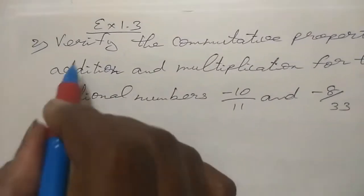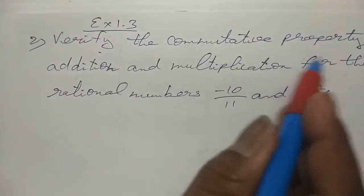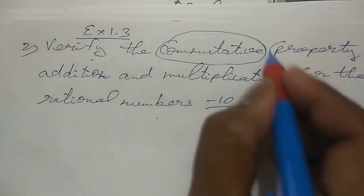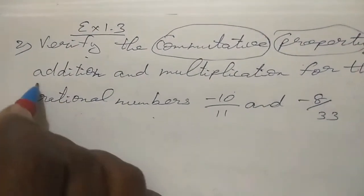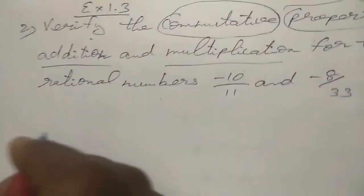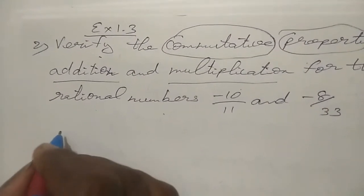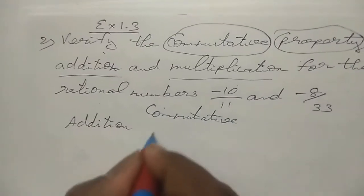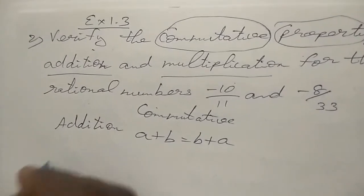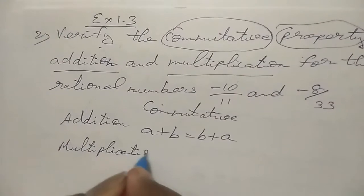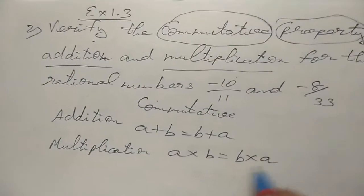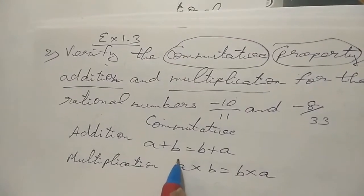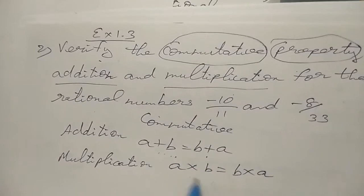Exercise 1.3, the second sum. Verify the commutative property for addition and multiplication for the rational numbers. The commutative property means: for addition, a plus b is equal to b plus a.